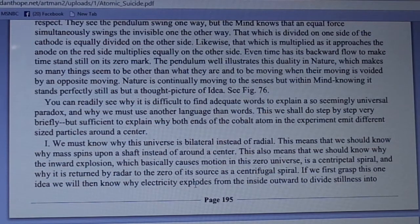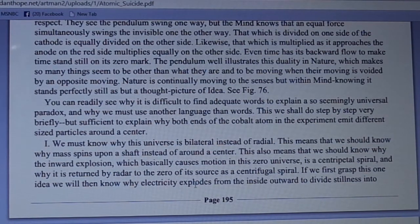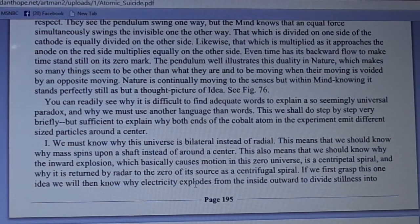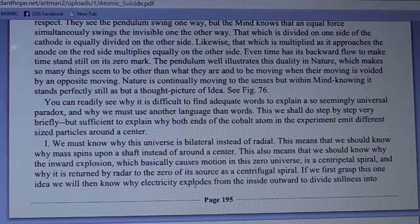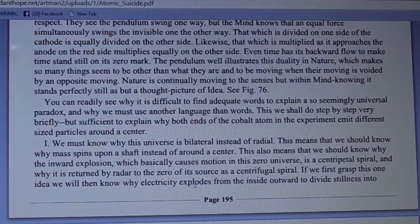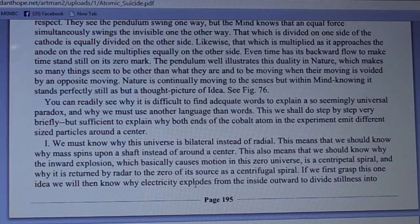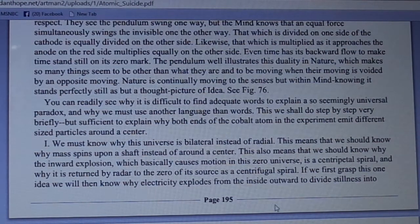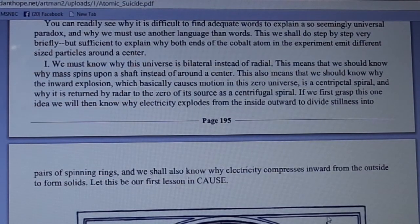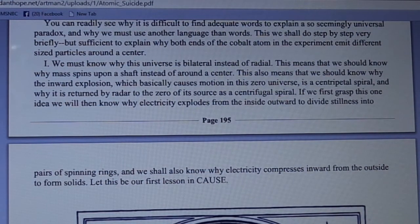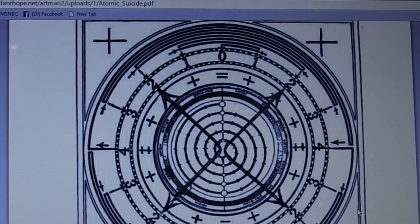We must know why this universe is bilateral instead of radial — why mass spins upon a shaft instead of around the center. This means we should know why the inward explosion which causes motion in this zero universe is a centrifugal spiral, and why it is returned by radar to the zero of its source as a centrifugal spiral. If we grasp this one idea, we will know why electricity explodes from the inside outward to divide stillness into pairs of spinning rings, and why electricity compresses inward from the outside to form solids. Let this be our first lesson in cause.